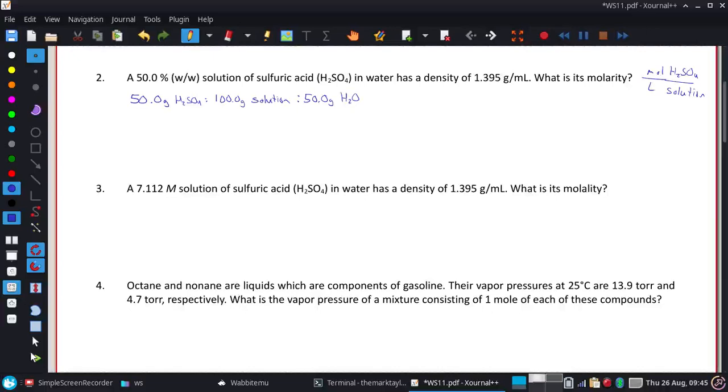On this problem, since we want moles of H2SO4 and liters of solution, we'll start with the grams of H2SO4 to convert to moles, and take the grams of solution to get liters of solution. We'll do them separately and put it together at the end.